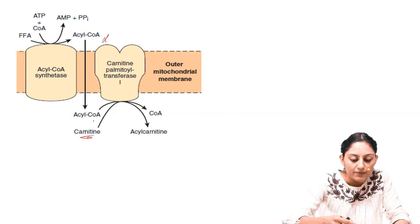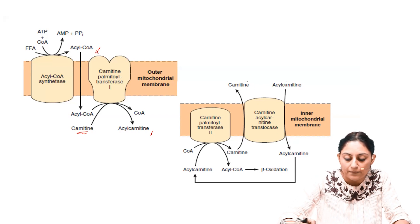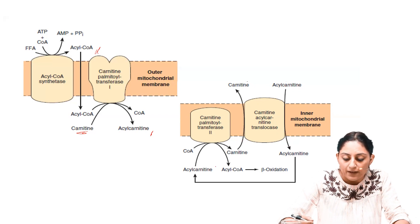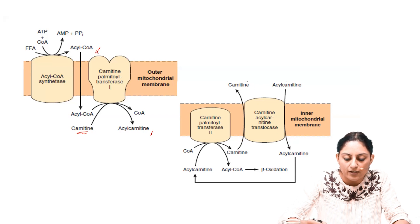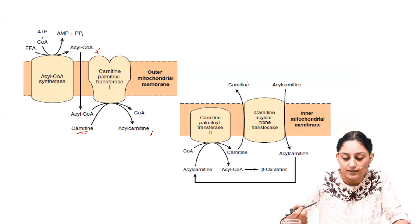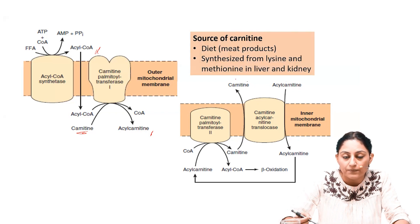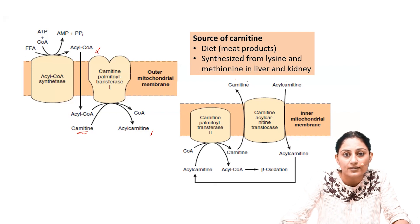In the presence of carnitine, acyl-carnitine is formed. With carnitine-acylcarnitine translocase, acyl-carnitine crosses the inner mitochondrial membrane in exchange for carnitine — carnitine goes out and acyl-carnitine enters. Acyl-carnitine is then converted back to acyl-CoA by carnitine palmitoyltransferase 2. Carnitine palmitoyltransferase 1 is located at the outer mitochondrial membrane. The source of carnitine is diet from meat products or synthesis in the liver and kidney from lysine and methionine.